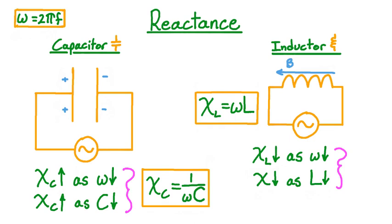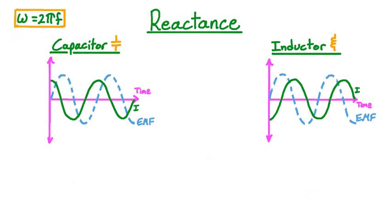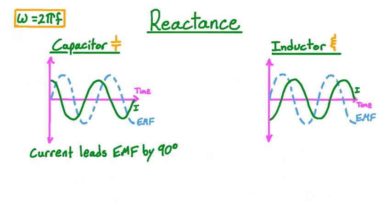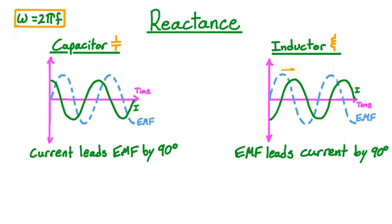Now that we've incorporated frequency into the size of the reactance, let's see how to incorporate phase. We've drawn two graphs showing electromotive force and current with respect to time, one for a capacitor and one for an inductor. In the capacitor graph, the solid green line representing the current reaches a maximum one-quarter of a period before the dashed blue line representing the electromotive force. So we see that the current leads the EMF by one-quarter of a period, or 90 degrees. For the inductor, it is the EMF that leads the current by one-quarter of a period, and in this case the current has been phase shifted forward. Note that these phase shifts don't affect the magnitude of the current, just its relationship in time to the EMF.